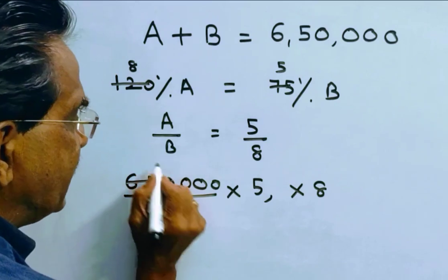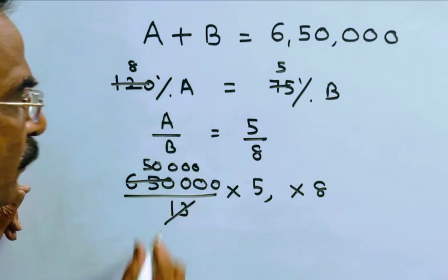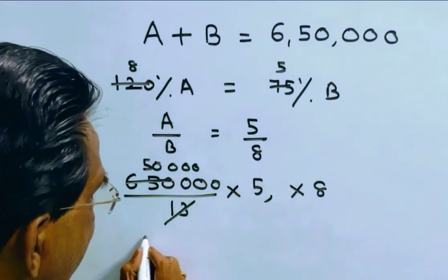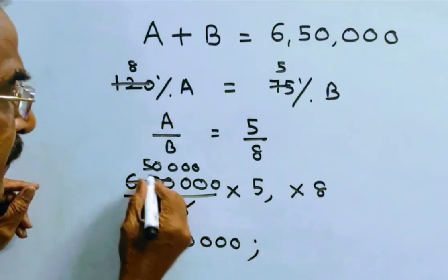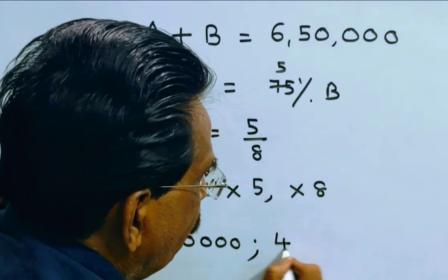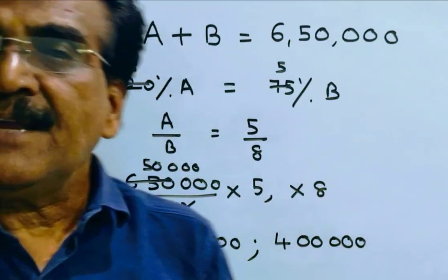So 6,50,000, so 15 into 5, 2,50,000. 2,50,000 is the cost price of car A. 50,000, 4,00,000 is the cost price of B.